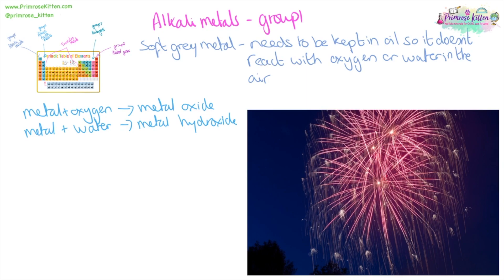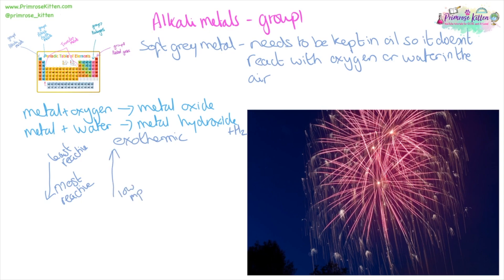The metal plus water is going to form a metal hydroxide — that's where it gets its name, alkali metal, because the metal hydroxide is going to be alkaline. You can see that by the change in indicator. You will also notice this is a very exothermic reaction: it releases a lot of heat and also releases hydrogen gas — that's what the fizzing was. The reactivity is greatest at the bottom and least at the top. Elements at the bottom have a lower melting and boiling point, while those at the top have a higher melting and boiling point.